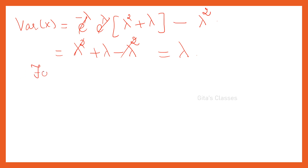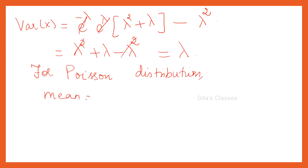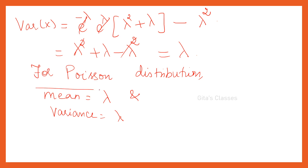For Poisson distribution, both mean and variance are equal to lambda. Mean = λ and Variance = λ. This is very important. If you want to find the standard deviation, it is root of lambda.